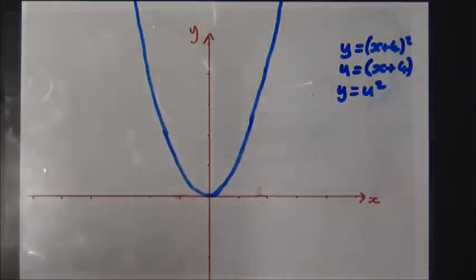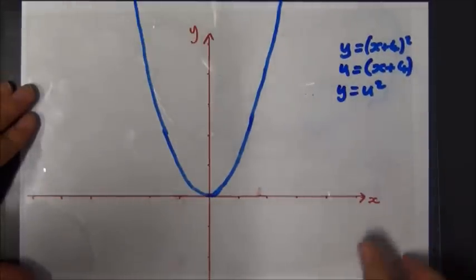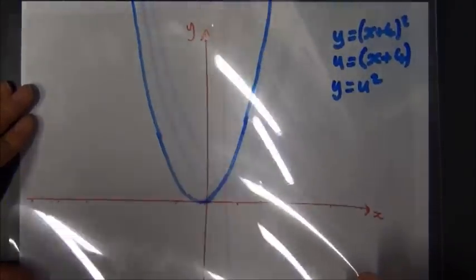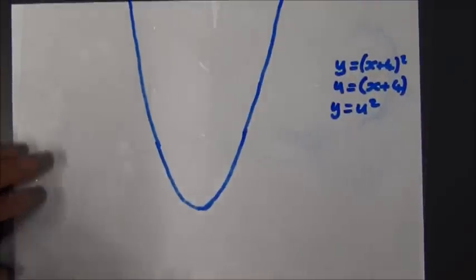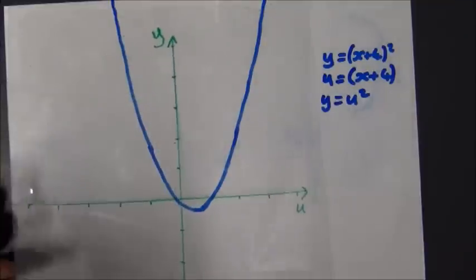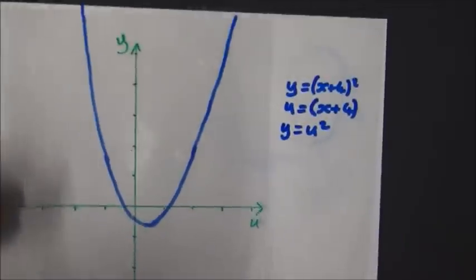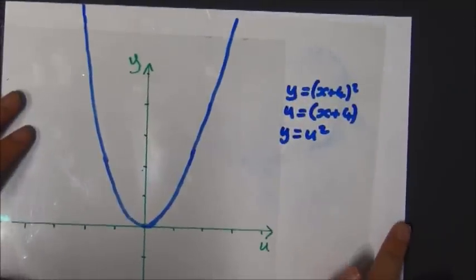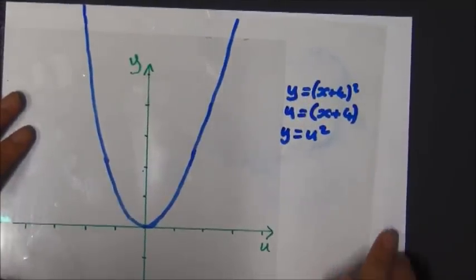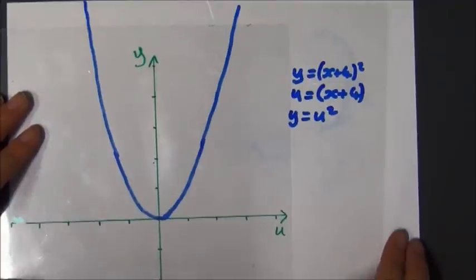Now to see what happens with this graph, I'm going to get rid of my x and y axis and instead I'm going to look at this on an axis that shows y against u. There we are. So that's the graph of y equals u squared.